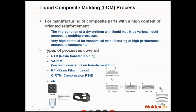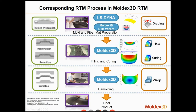The overall RTM process is as follows: first, we prepare a preform and close the mold with the preform inside, then inject the resin. We may heat the mold to make the resin cure, and after it is solidified, we open the mold and do the demolding.